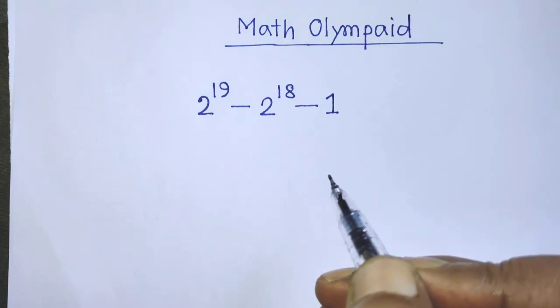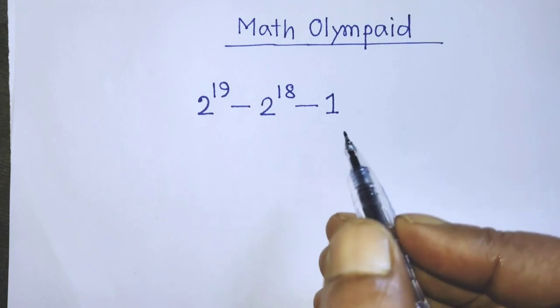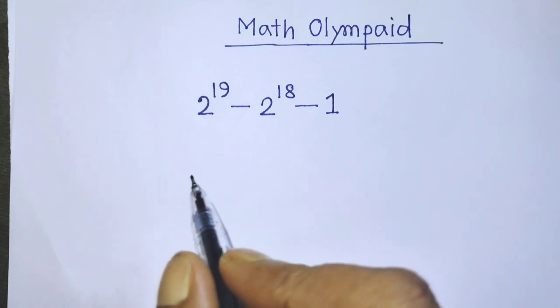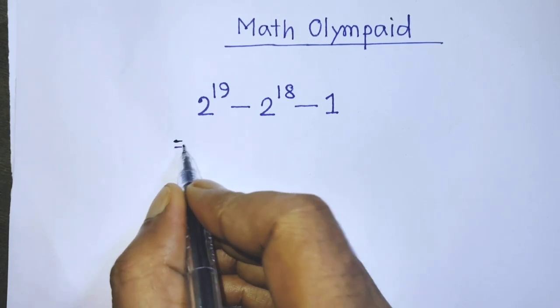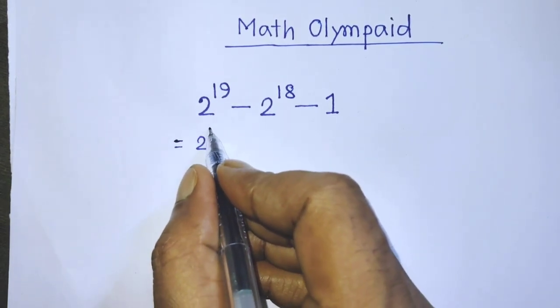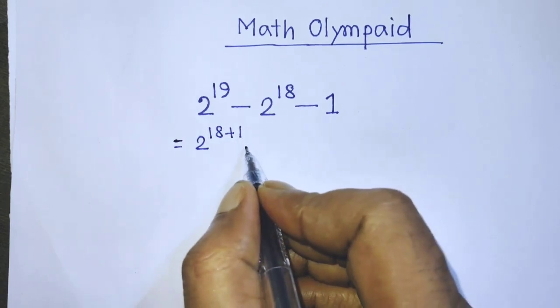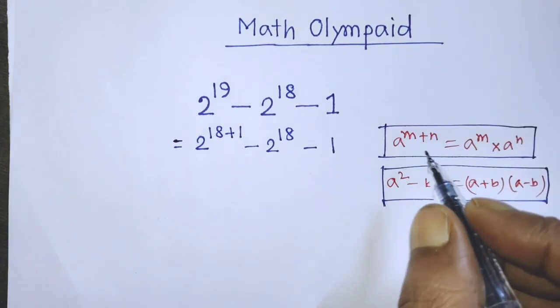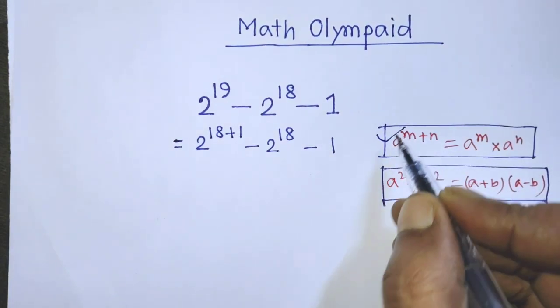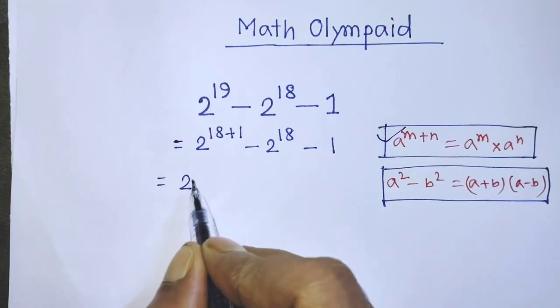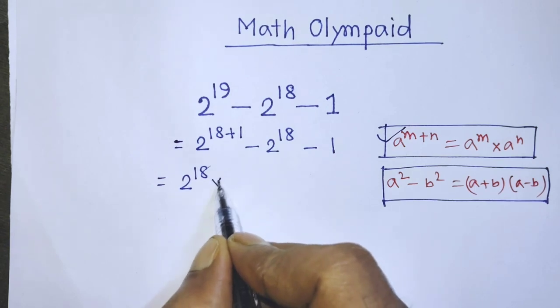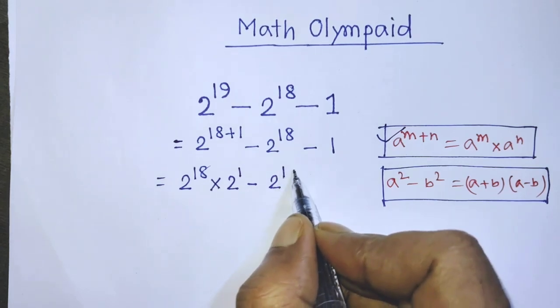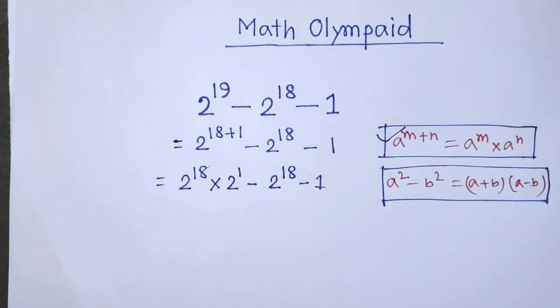So guys, today I am telling you how to simplify this algebraic expression. In the first step of the solution, it will be 2 to the power 18 plus 1 minus 2 to the power 18 minus 1. According to this formula, it will be 2 to the power 18 minus 2 to the power 18 minus 1.